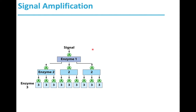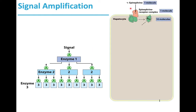Let us consider an example. Epinephrine triggers a series of reactions in hepatocytes, or liver cells. In this case, amplification of one enzyme results in the amplification of multiple enzymes. One molecule of epinephrine can activate the epinephrine receptor complex, or the beta-adrenergic receptor, which further activates ten molecules of the G-protein, specifically Gs-alpha.